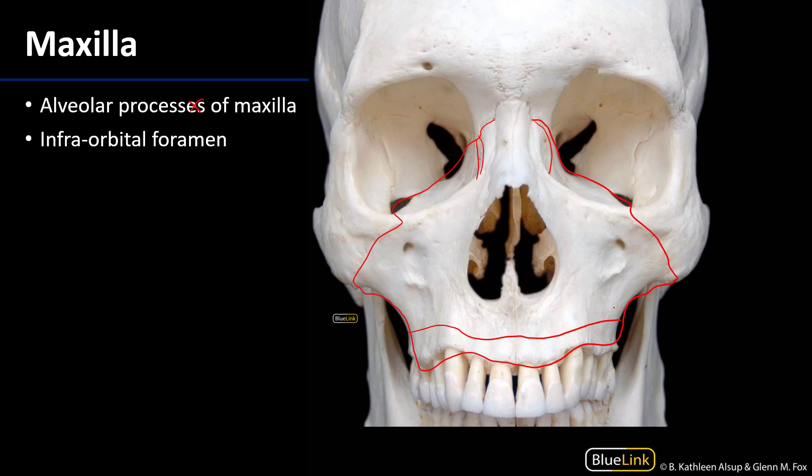We also have the infraorbital foramen — like the supraorbital foramen, these are almost in line with those. These are for the infraorbital nerves, branches of V2, the maxillary division. Most of the rest of V2 is quite secreted away in the deep face.